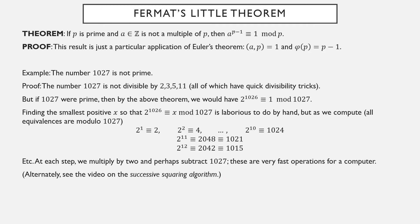Alternatively, there is a technique called the successive squaring algorithm that would allow you to do this by hand fairly quickly. But eventually what you'll end up with is 2 to the 1026 is equivalent to 857 mod 1027. That is not equivalent to 1, so since 2 to the 1026 is not equivalent to 1 mod 1027, 1027 must not be prime.